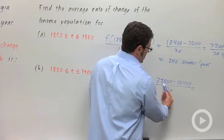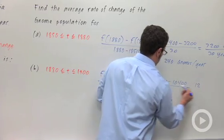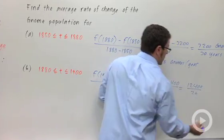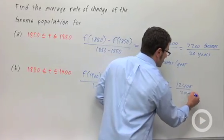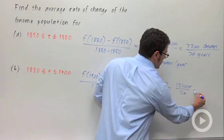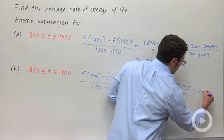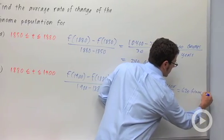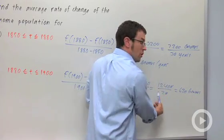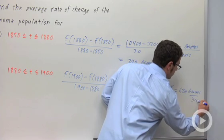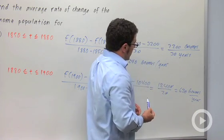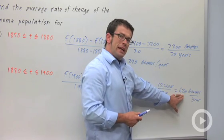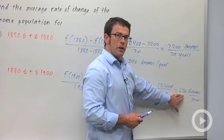So we have 22,800 minus 10,400: 22 minus 10 is 12, 8 minus 4 is 4, giving 12,400 over 20 — a 20-year period. Canceling a zero, this is 620 gnomes per year. So the average rate of growth of the population from 1880 to 1900 is 620 gnomes per year.